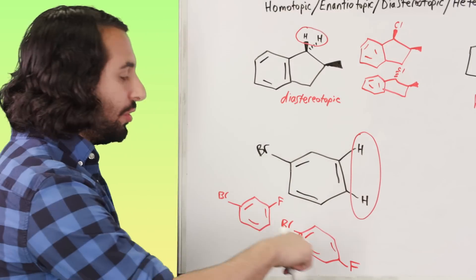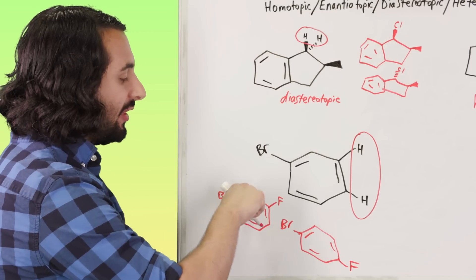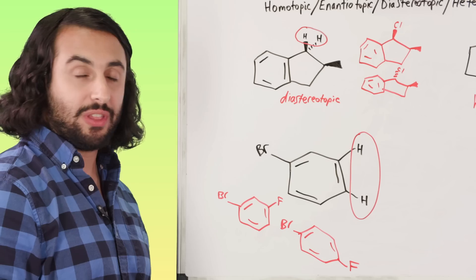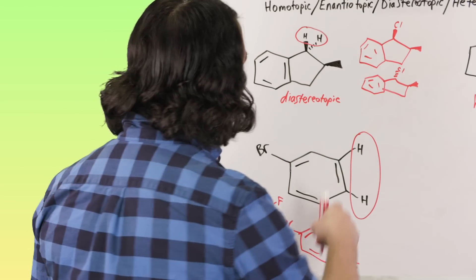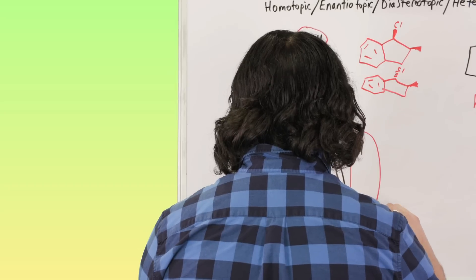Now these are clearly different structural isomers because these two have a meta-relationship, whereas over here they have a para-relationship, so those are structurally different. So these clearly have a heterotopic relationship.